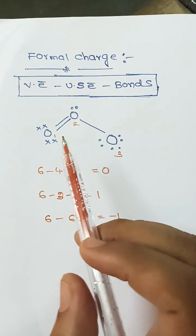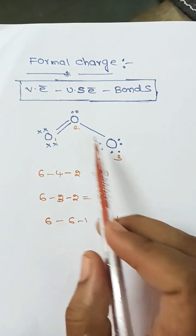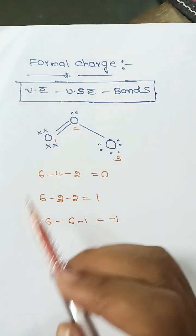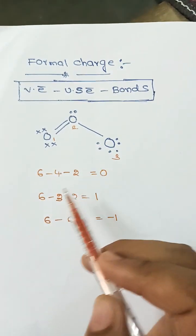Now we discuss the example. In the ozone molecule, we have three different types of oxygen atoms. Let's calculate the formal charge on each individual oxygen atom.